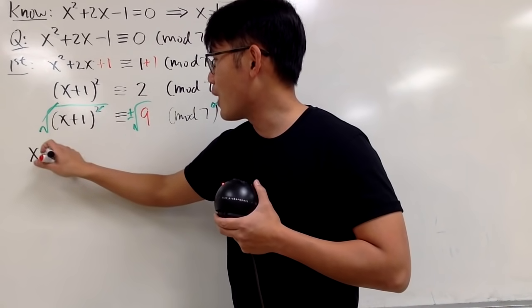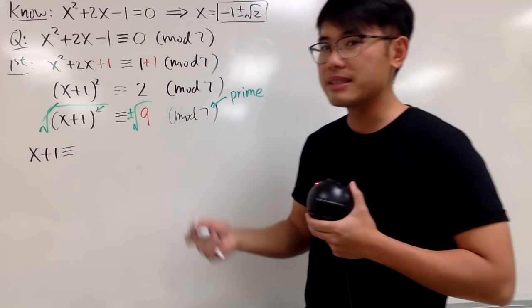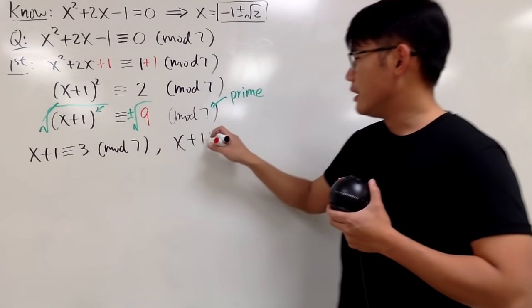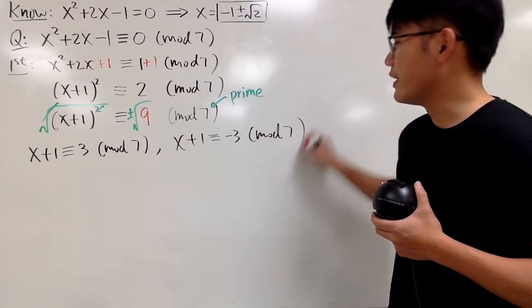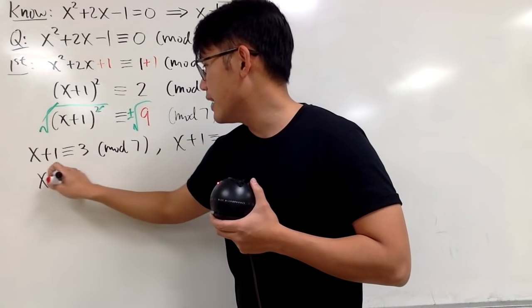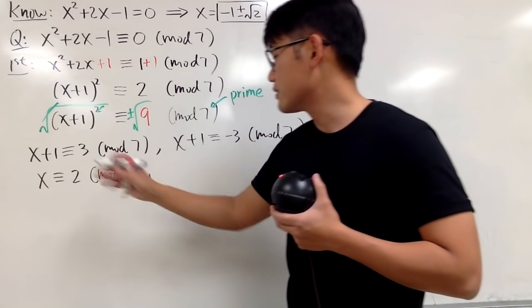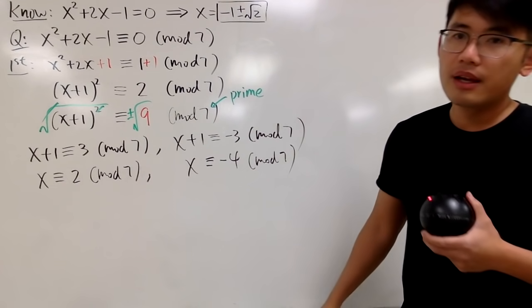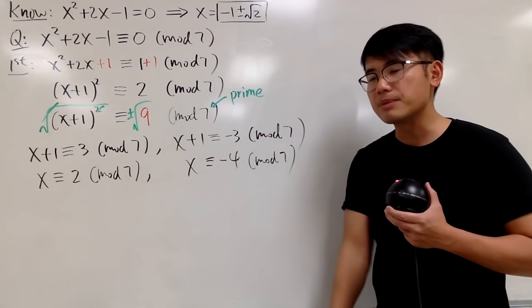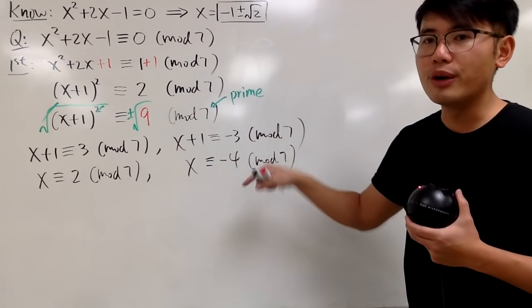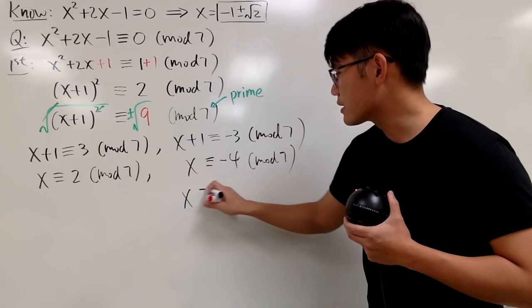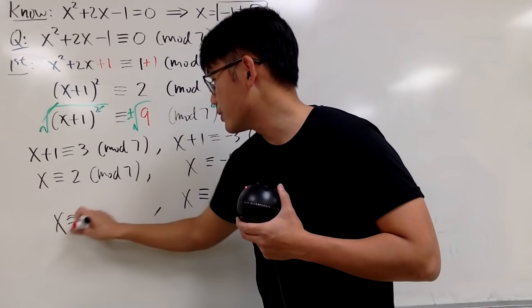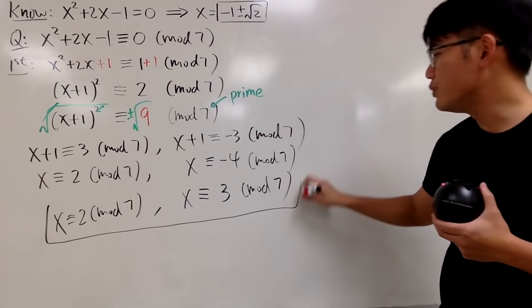Well, here we have x plus 1 is congruent to, the first situation is positive 3, square root of 9 is positive 3, and then mod 7. And then the other situation, x plus 1, is congruent to negative 3 mod 7. And then we'll just solve this and that. Minus 1 on both sides, x is congruent to 2 mod 7. So that's the first answer. And then the other one, minus 1 on both sides, x is congruent to negative 4 mod 7. So that's pretty much it, but usually we want to keep this as positive as possible. So what we can do is go from negative 4 and you add 7 to it, and you end up with positive 3. So I will tell you x is congruent to positive 3. And let's put on the mod 7. So we have two answers,